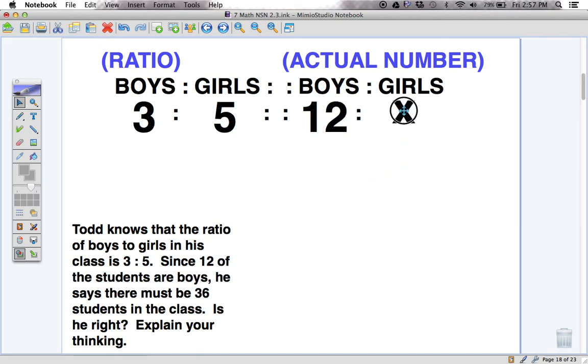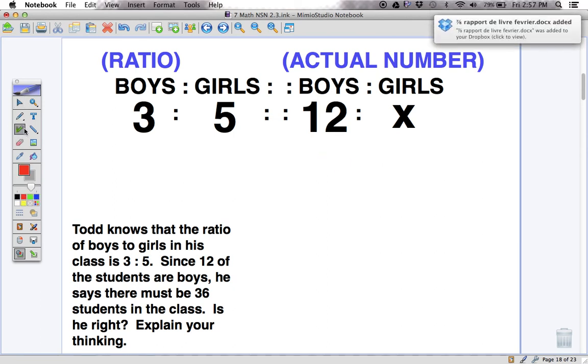And finally, there's our unknown. We're trying to figure out how many kids are in the class in total, which will be the sum of these two numbers right there. 12 and x. We just don't know how many girls there are right now.